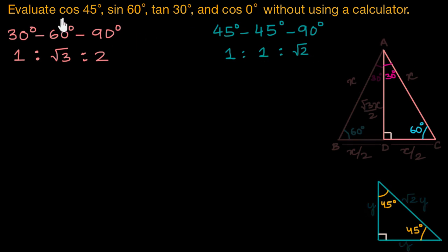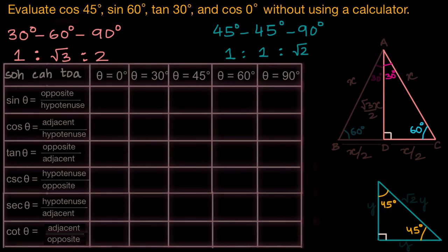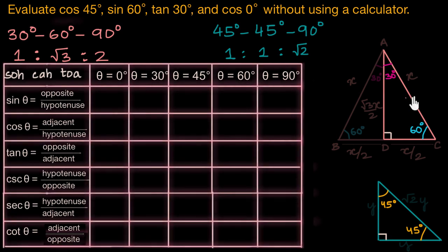Coming back to our problem — not just these ratios, but let's figure out all the trigonometric ratios related to these angles. I have already laid out a table for you. So let's start with theta equals 30 degrees and figure out each of these ratios. We will deal with 0 and 90 degrees towards the end.